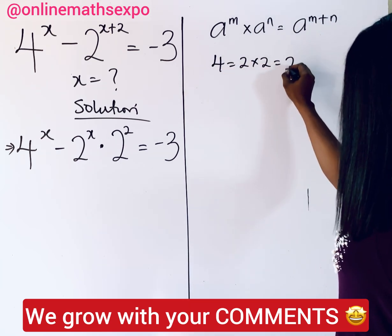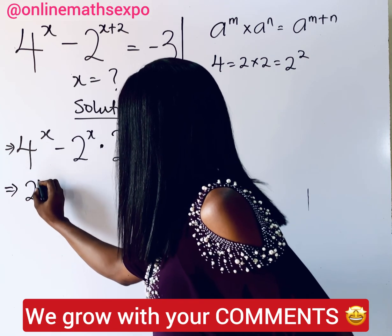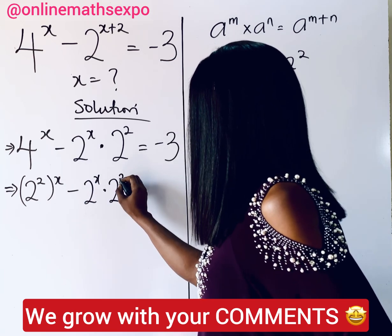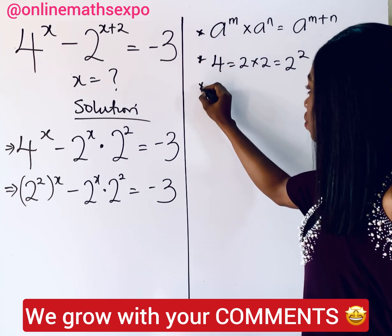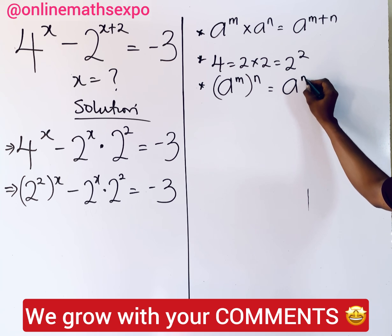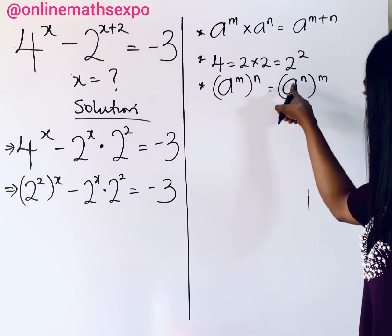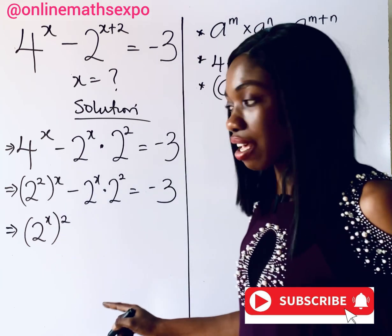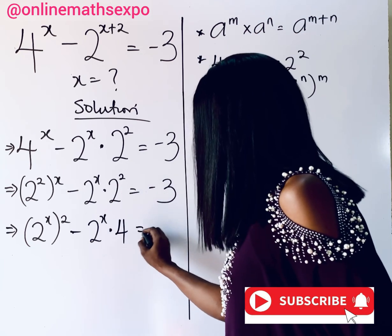Remember that 4 is 2 times 2, which is 2 raised to the power of 2. So for this 4, we are going to have 2 raised to the power of 2, then raised to the power of x, minus 2 raised to the power of x — and this is equal to negative 3. Now one of the important rules says that a to the power of m raised to the power of n is the same as a to the power of n raised to the power of m — we only switch the exponents. Applying that, we get 2 to the power of x raised to the power of 2, minus 2 to the power of x multiplied by 4 — since 2 raised to power 2 is 4 — equals negative 3.